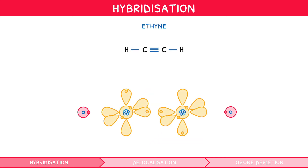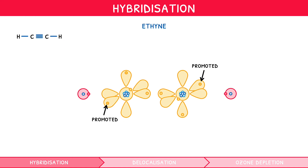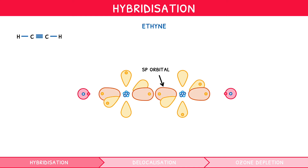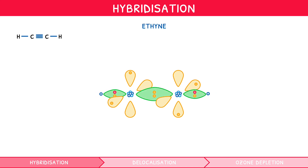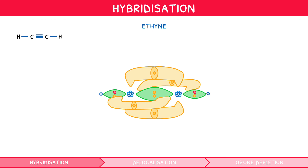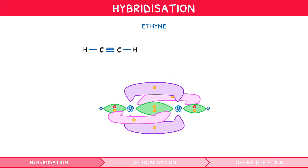Let's now look at ethyne. Like with ethene, each carbon undergoes promotion. Next, each carbon undergoes hybridisation to create two sp hybrid orbitals, since both need to create two bonds. This uses one of their 2p orbitals, leaving two 2p orbitals on each carbon containing one electron. The sp hybrid orbitals on each carbon all collide in an axial manner to bond to the hydrogens and the other carbon, forming two sigma bonds for each carbon. The remaining two 2p orbitals on each carbon can both overlap in a parallel manner to form two separate pi bonds, creating three bonds between the carbons — one sigma and two pi — thus representing a triple bond, as confirmed by the displayed formula.